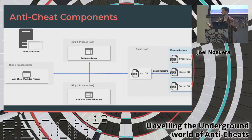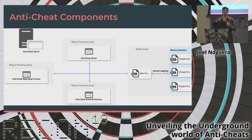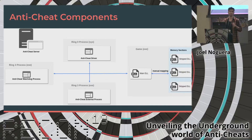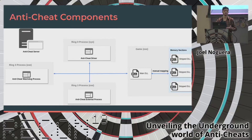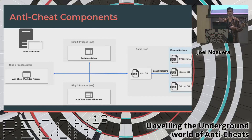Now that we understand the different options we have, we need to see the main components that an anti-cheat may have. Some components will be optional. First, we have an anti-cheat server which manages all the heartbeat connections with each agent running at the same time as the game. If this heartbeat is disconnected — because the process crashed or the anti-cheat service was killed — it will automatically kill the game so no one can play without the anti-cheat. It will also receive all the alerts and reports for players with malicious or weird behavior.